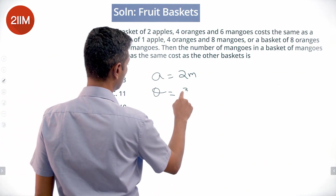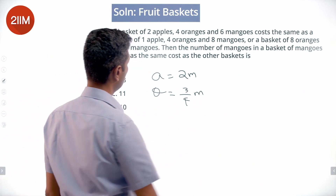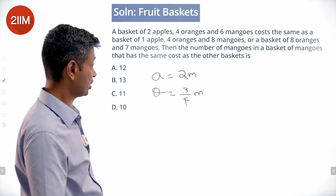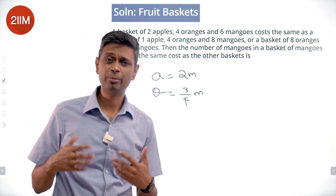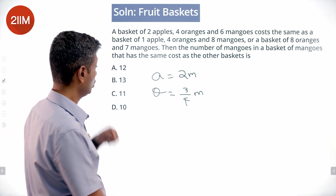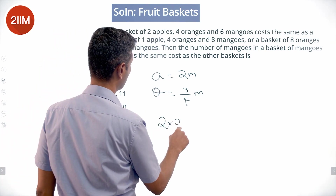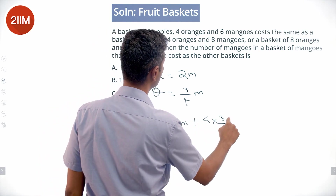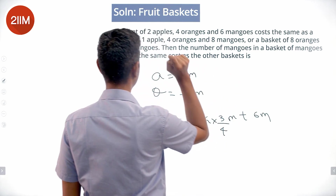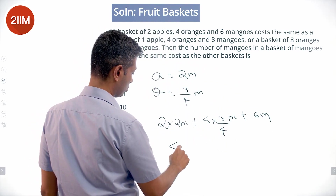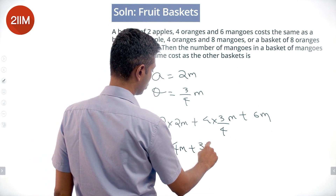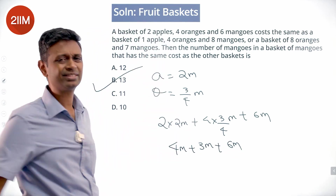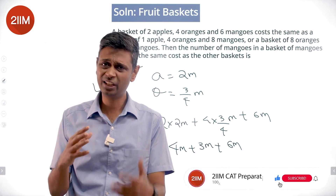Now convert everything in the first basket to mangoes: 2 apples = 2 × 2 = 4 mangoes; 4 oranges = 4 × (3/4) = 3 mangoes; plus 6 mangoes. Total = 4 + 3 + 6 = 13 mangoes. So the answer is 13 mangoes.